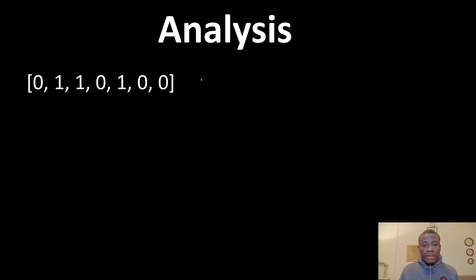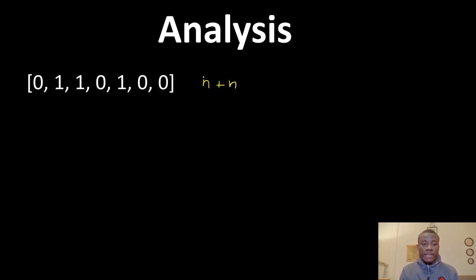Whatever is left, we fill it with ones. The running time is going to be n plus n, because the first n is when you are counting the number of zeros, and the second n is when you are filling the remaining part of the array with ones. So let's say you have two iterators. This is j — it is going to count the zeros seen so far.